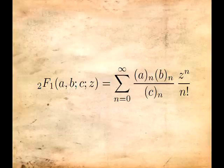The 2 represents the number of Pochhammer symbols on the numerator, the a_n and b_n on the left side. The 1 represents the one Pochhammer symbol on the denominator, the c in parentheses with the subscript n.